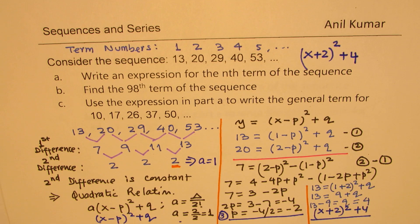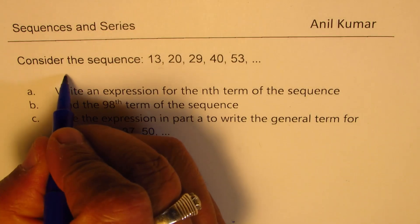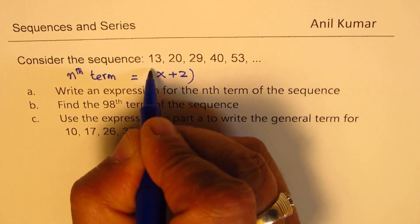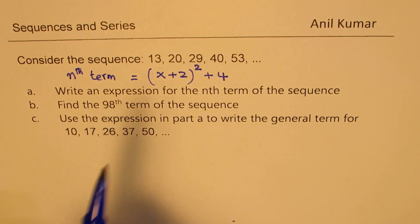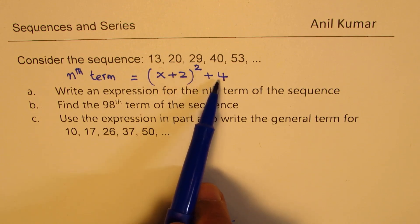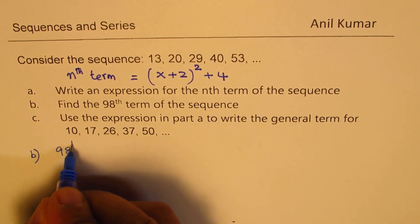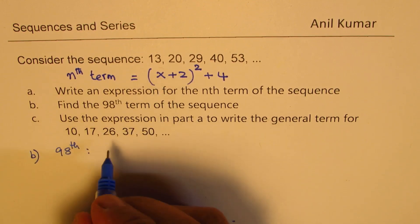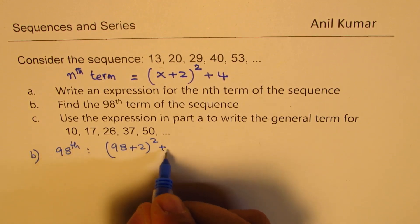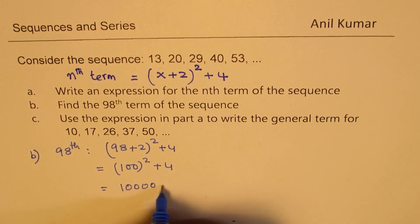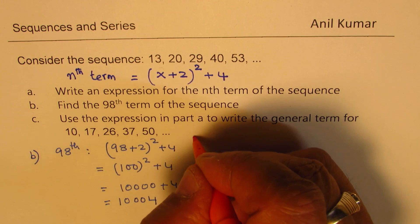Now we'll use this formula to find the 98th term. The nth term is (x plus 2) squared plus 4. We can verify: substituting x equals 1, we get (1 plus 2) squared plus 4 equals 9 plus 4 equals 13. For Part B, the 98th term: substituting x equals 98 gives (98 plus 2) squared plus 4 equals 100 squared plus 4 equals 10,004.